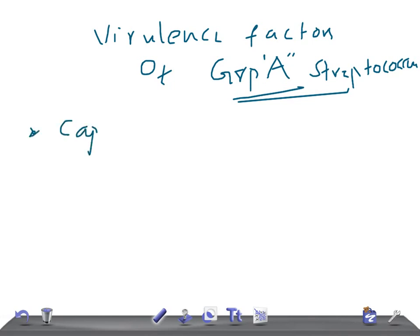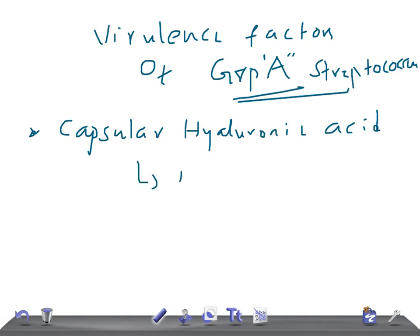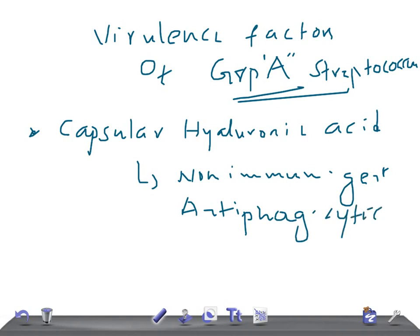Starting from outside, the first virulence factor is the capsular hyaluronic acid. The capsule can induce antibodies which are not protective. The capsule is non-immunogenic but protects the cells against phagocytosis, so its role is: non-immunogenic and anti-phagocytic.